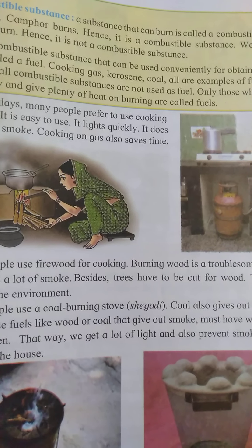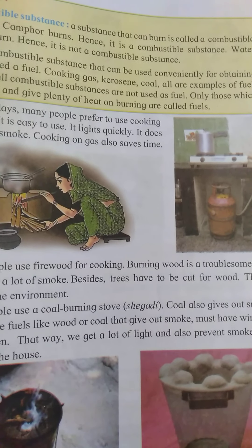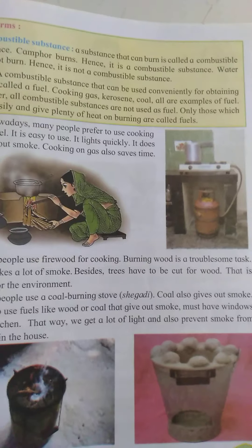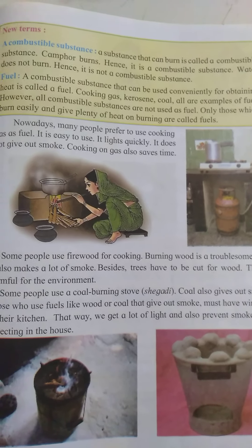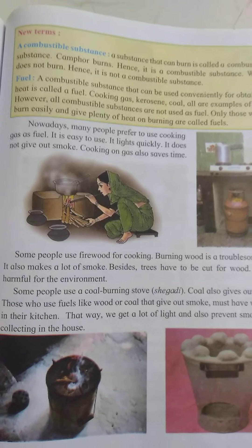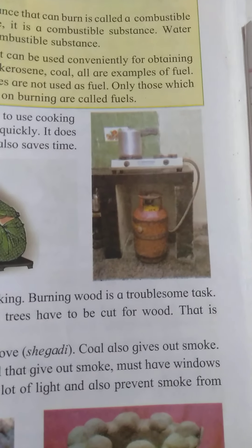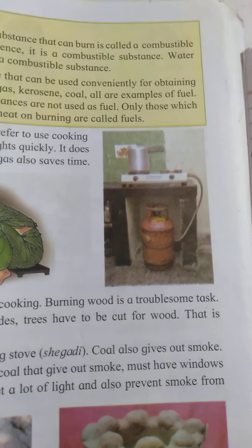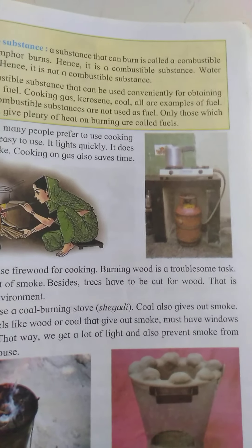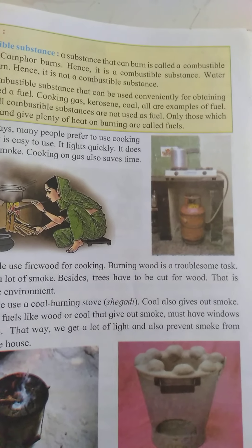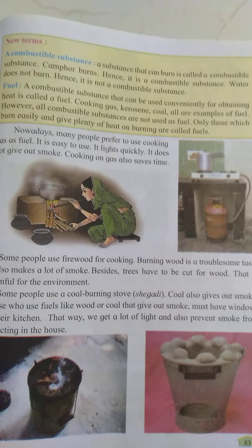We usually cook food inside the kitchen, so let's learn the different types of cooking devices. All methods of cooking need heat, so in every kitchen there has to be some instrument which can give heat to cook the food. The first one is the gas stove. In many houses there are gas stoves for cooking. In a gas stove we burn LPG, and when the gas burns it gives us heat to cook the food.